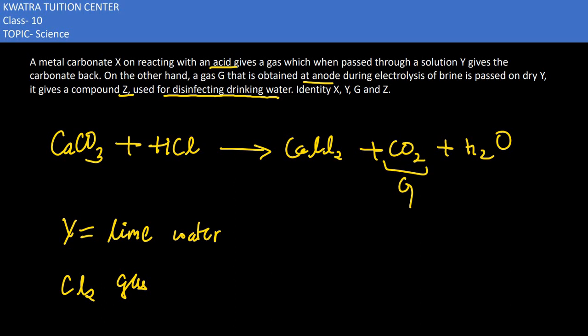So the complete answer is: X is calcium (the metal in the carbonate), Y is lime water, G is carbon dioxide, and Z is chlorine gas, which is used to disinfect drinking water.